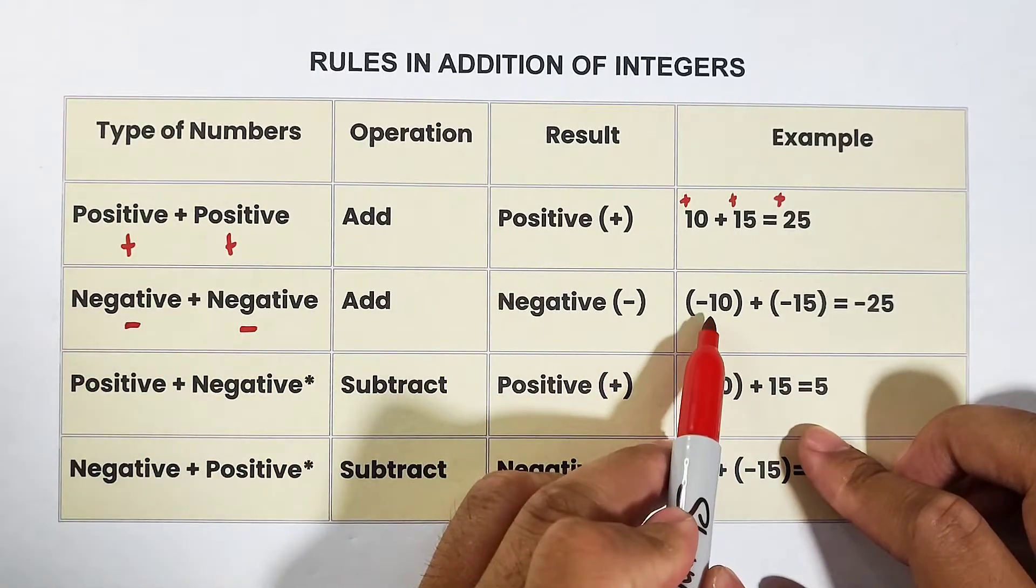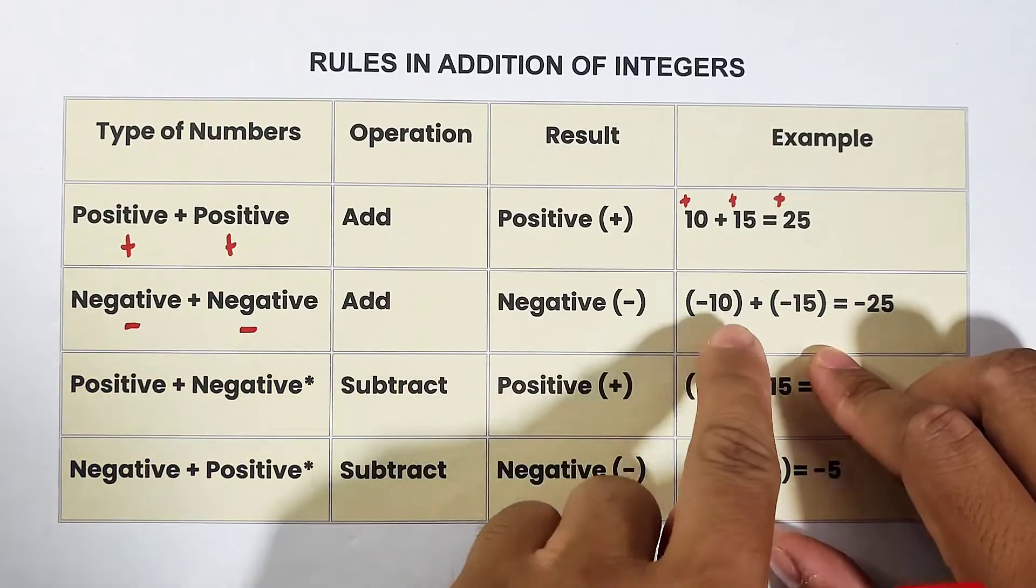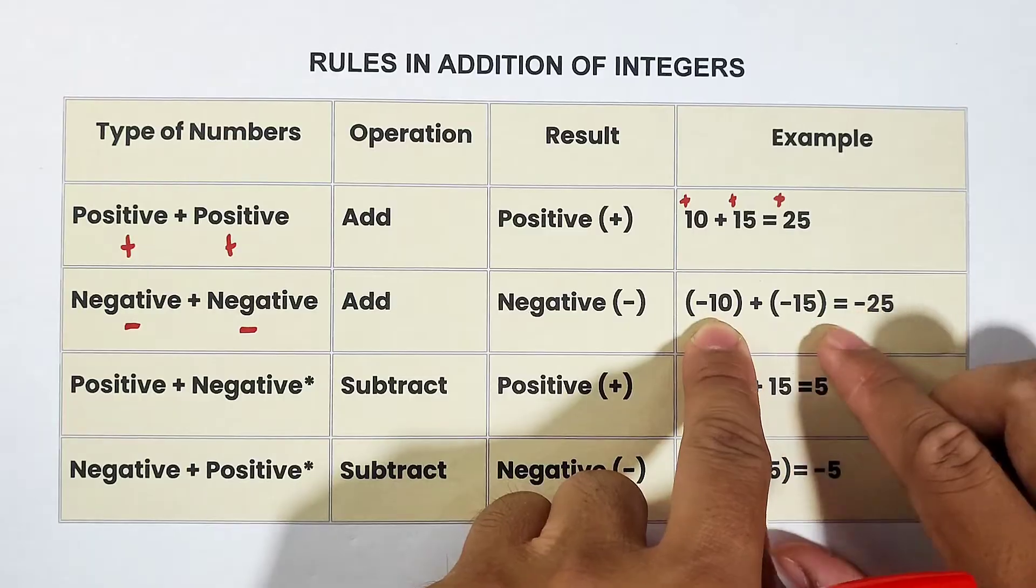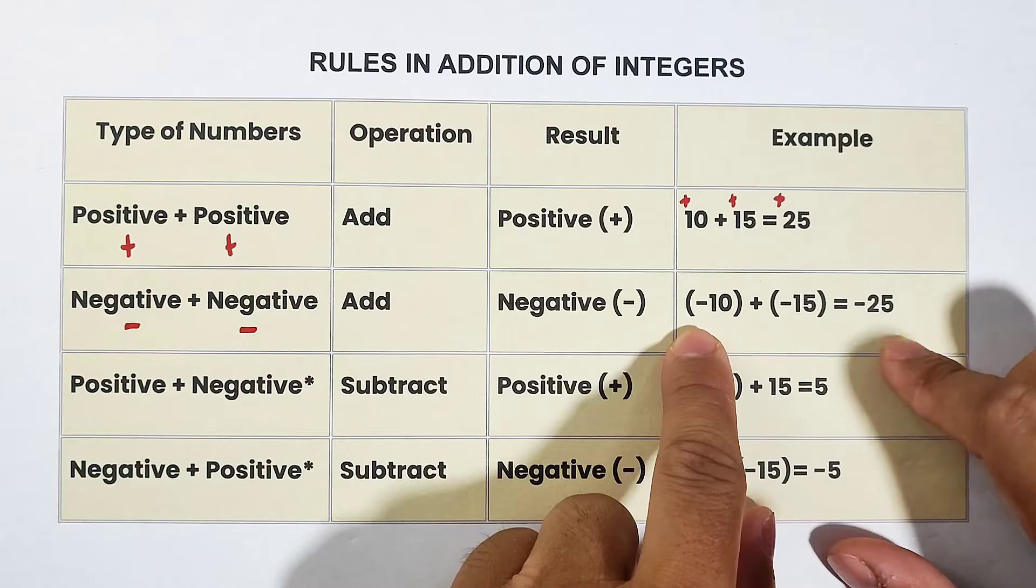And for the example, we have here negative 10, this is negative, and then negative 15. What you need to do is add 10 plus 15, that is 25, and then copy the sign of the integers, which is negative.